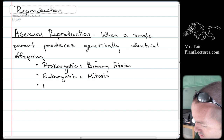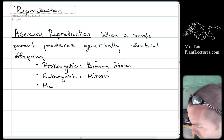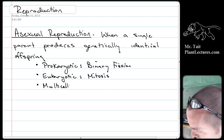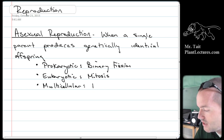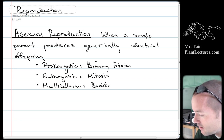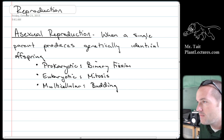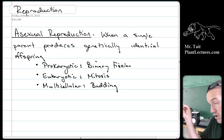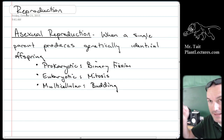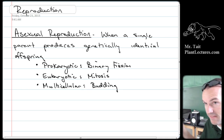The last type is interesting — multicellular asexual reproduction, commonly called budding. What happens in budding is that a part of an organism will break off, and instead of that part dying, it will develop into a whole new, identical organism.